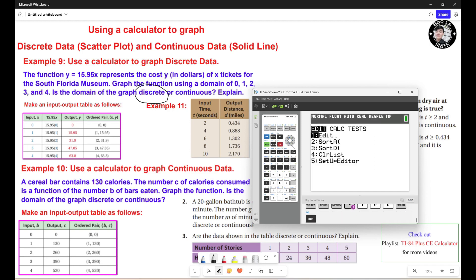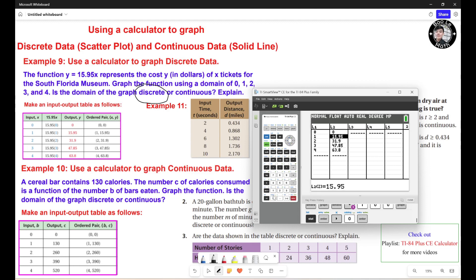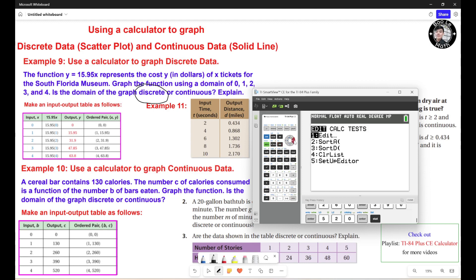We're gonna start over. We're gonna hit stat, edit. We're gonna change the value. The input should be 0 through 4, so this could be already done. Now, second one. The output should be 0, 130. So 0, 130, 260, 390, and 520. Now you hit stat again, go to calc number 4, L1, L2 and store right here. Hit vars, Y vars, function Y1. Calculate, hit enter.